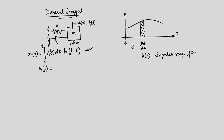What is the expression for the impulse response function? The impulse response function h(t) is 1 over m*omega_d times e to the power minus eta*omega_n*t times sin(omega_d*t). That is the expression. Now, f(t) the forcing function is arbitrary, and for this forcing function we have to numerically evaluate this response. That is the objective for today's discussion.